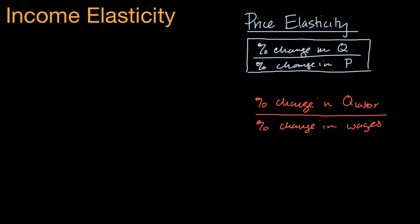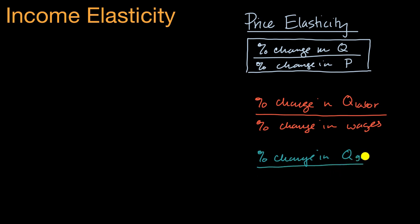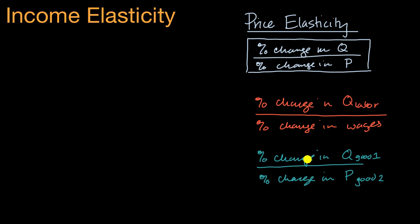You can even see things — and we'll have a whole video about this, probably my next video — where you could have the percent change in quantity demanded of one good, divided by the percent change in price of not that good but of good two. This is actually thinking about how good one is a substitute for the other, and we'll go into a lot more depth there.